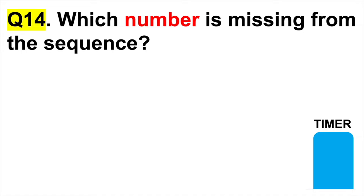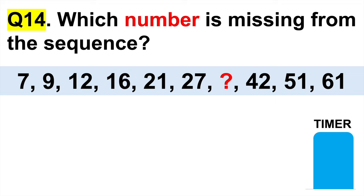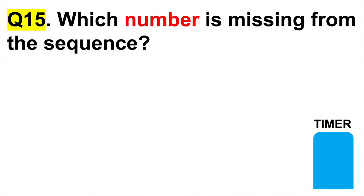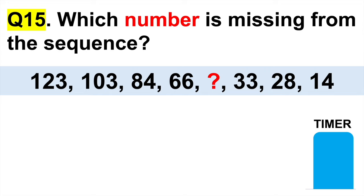Question 14 is a little harder for two reasons: which number is missing from the sequence? You have to decide which number goes where the red question mark is — and I am not going to give you any answer options. Be aware that sometimes during psychometric tests you will not get multiple choice answers. Question 15: which number is missing from the sequence? Tell me in the comments section below the video.